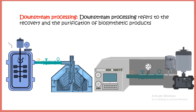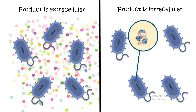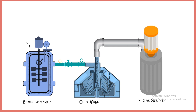Downstream processing refers to the recovery and purification of the biosynthetic product generated in the upstream process. There are two scenarios: the product could be extracellular — a metabolite secreted outside the bacteria — or intracellular, such as an enzyme retained inside the cell. Each type requires a different purification approach.